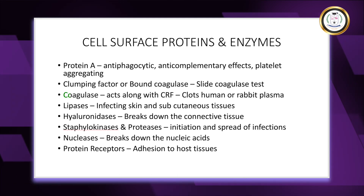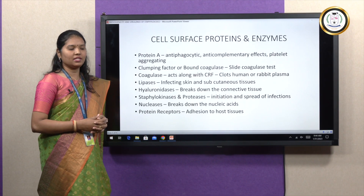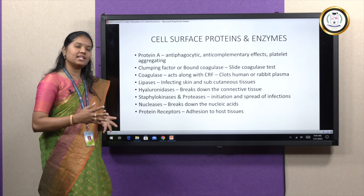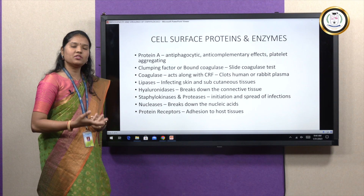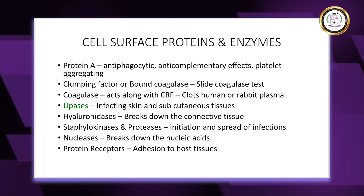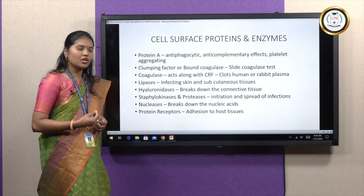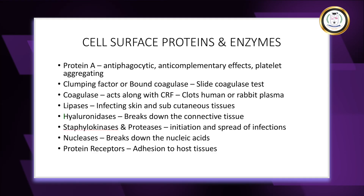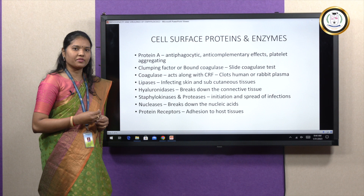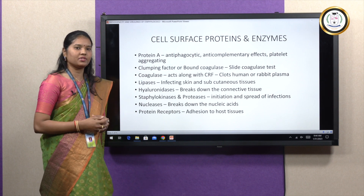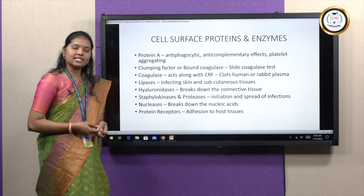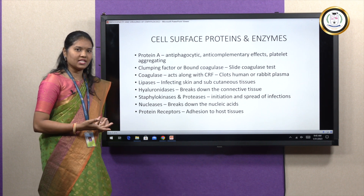The first enzyme is coagulase, which is able to break the fibrin barrier of cells and tissues of the human host, enabling the organisms to evade host tissues. Lipases help the organisms infect the host through the skin and subcutaneous tissues. Hyaluronidases break down hyaluronic acid, which makes up connective tissues, enabling the organisms to spread through connective tissues. Staphylokinases or fibrinolysins as well as proteases help in the initiation and spread of infection.